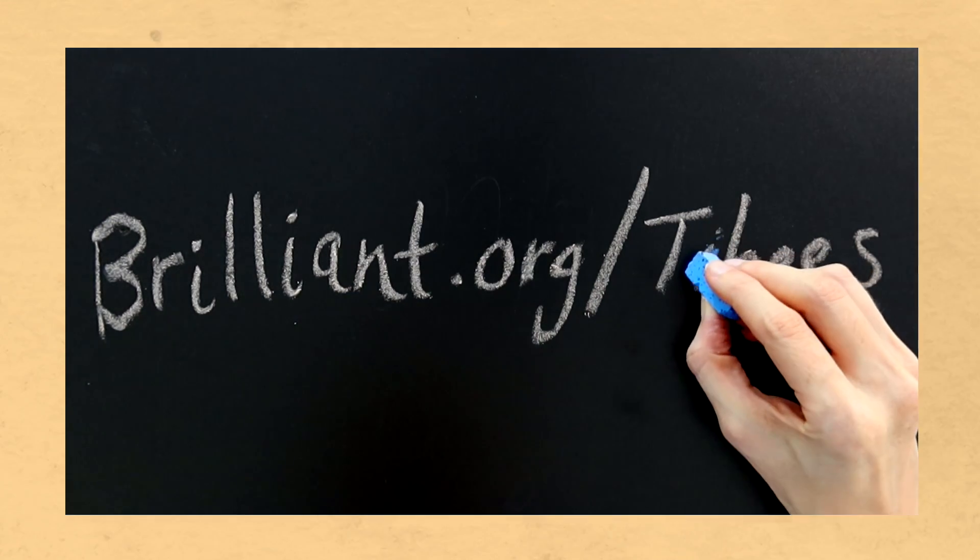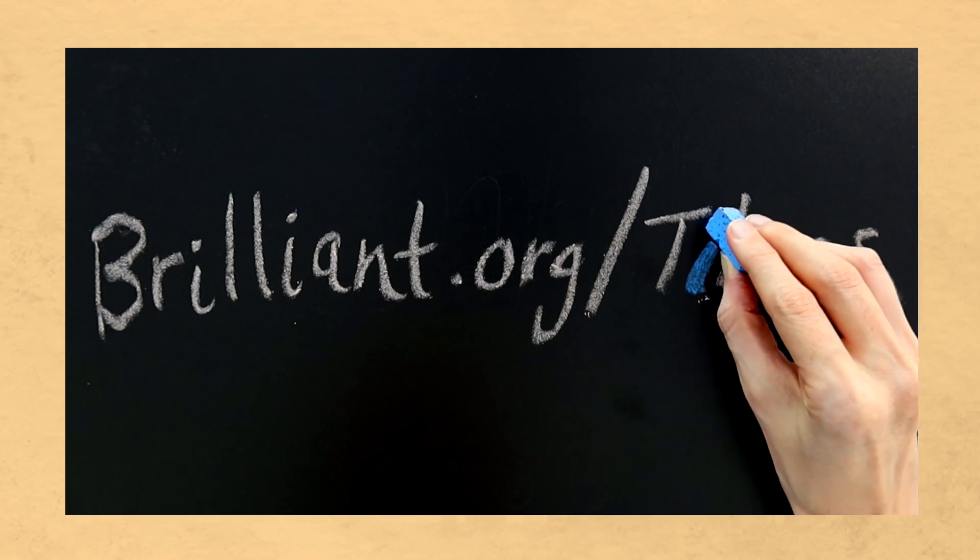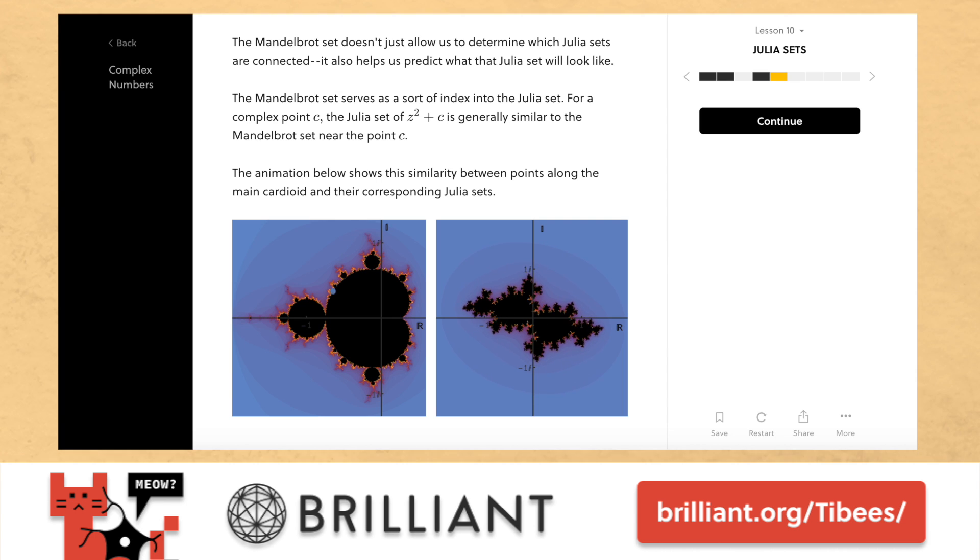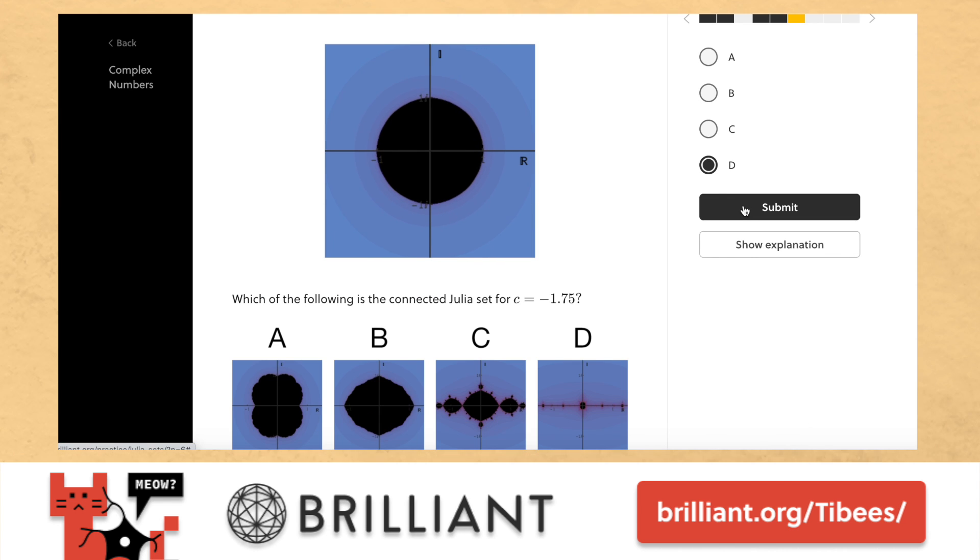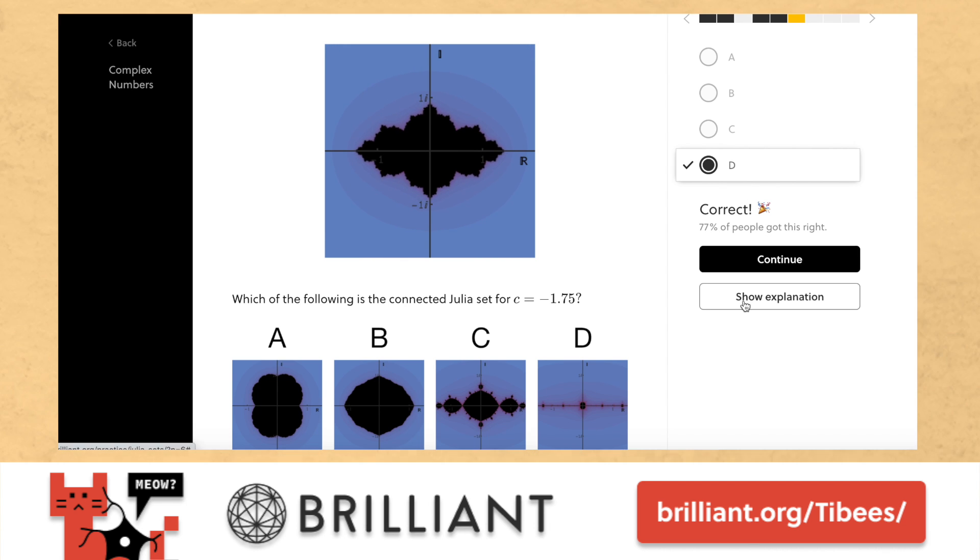To meet some more imaginary friends, head over to Brilliant who have kindly sponsored this video. Brilliant is a place to learn in a fun and challenging way. And while there, you can meet my pals Julia and Mandelbrot in a course on complex numbers. They will guide you through the rest of the topic with visits to complex multiplication, polar coordinates, and the most beautiful Euler's formula.